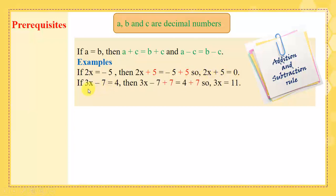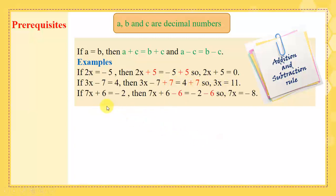Also, if 3x minus 7 equals 4, then 3x minus 7 plus 7 equals 4 plus 7. Here we added 7 to both sides, so we get 3x equals 11. If 7x plus 6 equals negative 2, then 7x plus 6 minus 6 equals minus 2 minus 6. Here we subtracted 6 from both sides, so we get 7x equals minus 8.